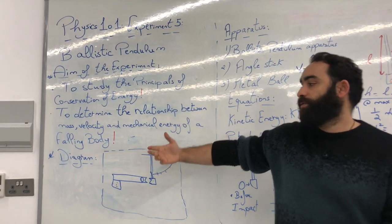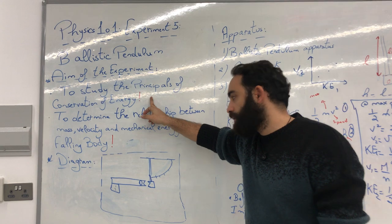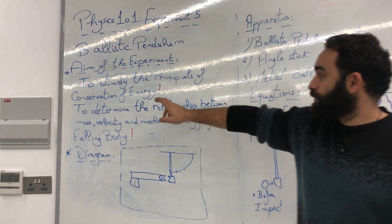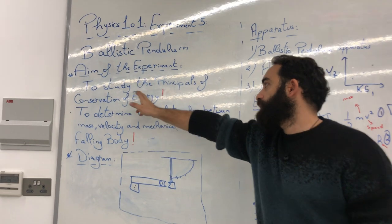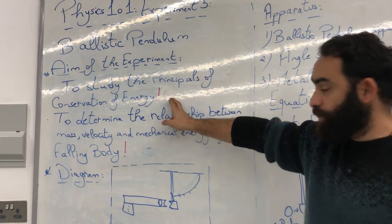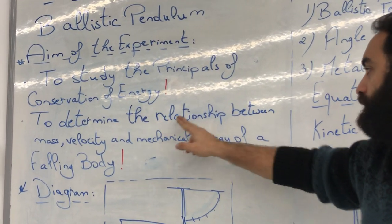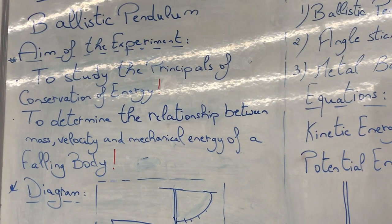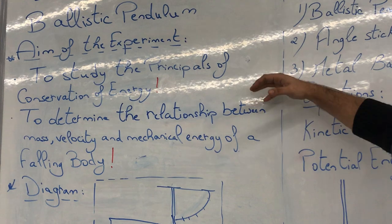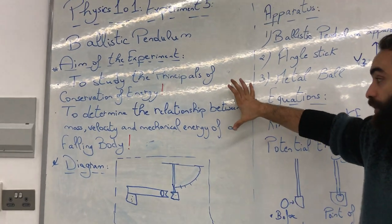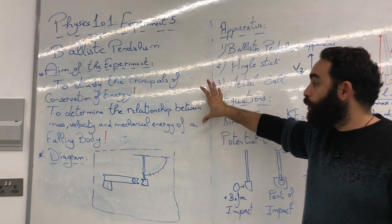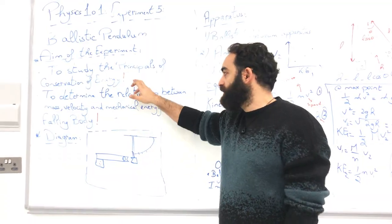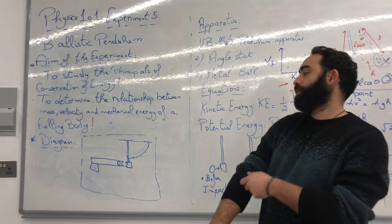If we do not see these exclamation marks in your report, you will get a zero. The aim of the experiment is to study the principles of conservation of energy and to determine the relationship between mass, velocity, and mechanical energy of a falling body. This is the first requirement for the last week. You should write this aim word per word, including the exclamation marks. They don't have to be red — you can choose any color you want.